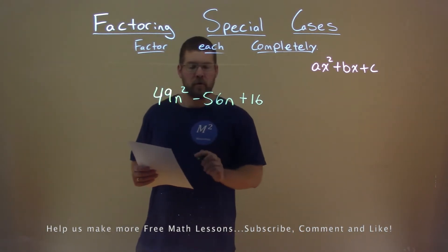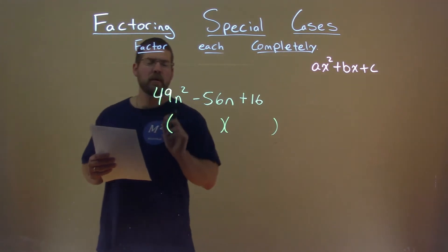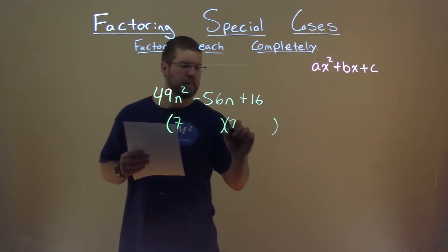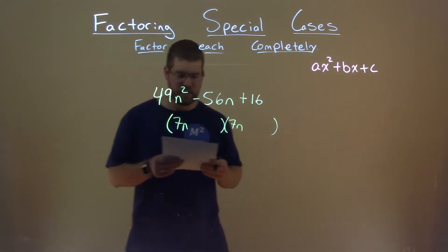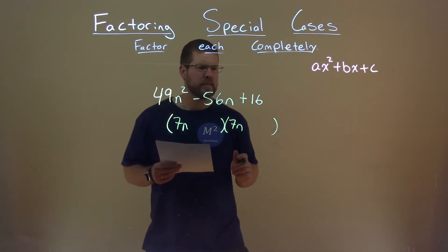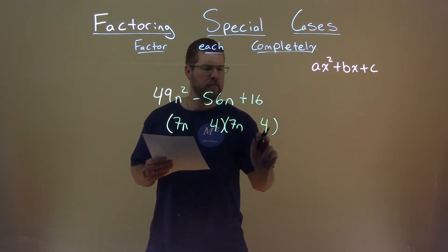Notice my first and last term are both perfect squares. What do I mean by that? Well, the square root of 49 is 7, the square root of n squared is n, so 7n times 7n is 49n squared. What about 16? Well, the square root of 16 is 4, so 4 times 4 is 16.